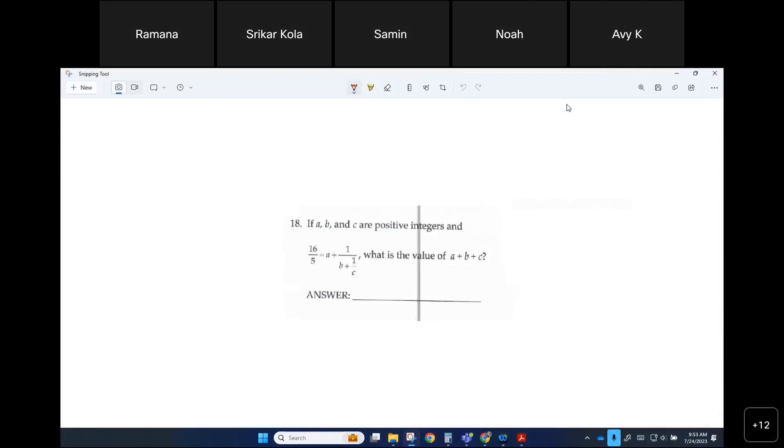If a, b, and c are positive integers and 16 over 5 equals a plus 1 over b plus 1 over c, what is the value of a plus b plus c? Right, so 16 over 5, how can you write as a mixed fraction? Can someone tell me what is a mixed fraction for 16 over 5?